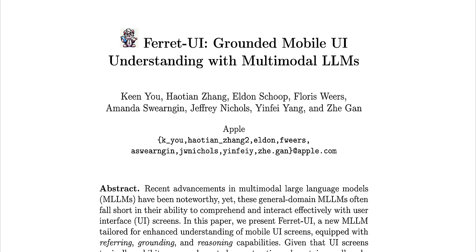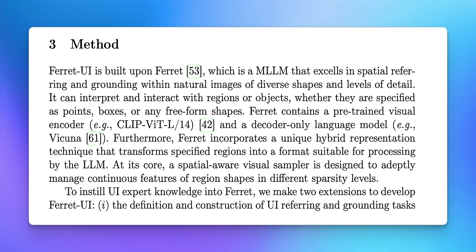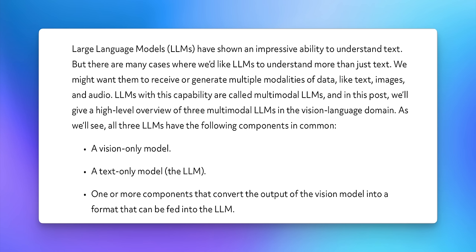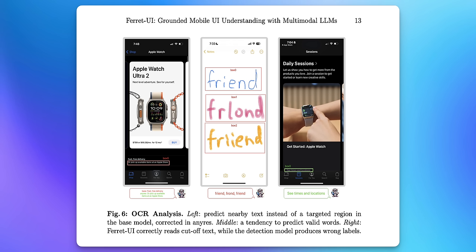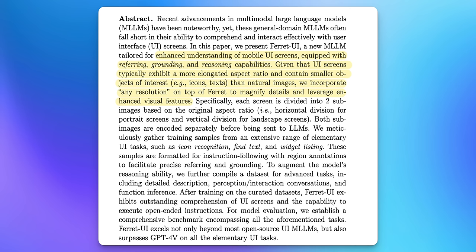This is Apple's latest AI advancement, and it comes from a research paper that was just recently released and published by Apple. This is called Ferret UI — a new multimodal large language model, or MLLM. Keep in mind an MLLM is different from an LLM because it goes beyond text. An LLM, which is what ChatGPT runs off of, is only able to understand text, but an MLLM can understand multimodal elements such as images, video, and even audio.